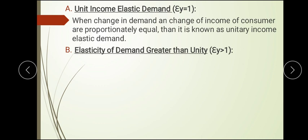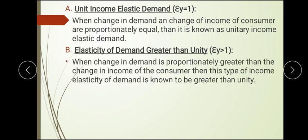Elasticity of demand greater than unity means the change in demand is greater than the change in income. For example, if income rises by ten percent but demand for a product rises by fifteen percent, then fifteen divided by ten equals 1.5, which is greater than one — so this is called income elasticity greater than unity.